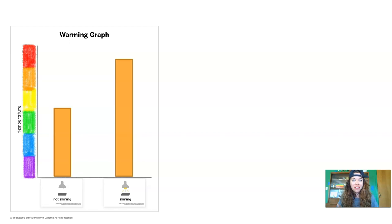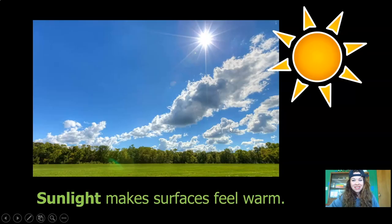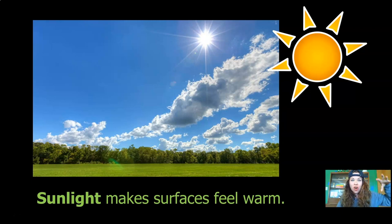We used this data that we gathered to make a graph. Graphs are used to organize data and information so that it's easy for people to look at and understand quickly. The temperature was higher under the lamp that was shining, and we can easily see that in our bar graph. We discovered that sunlight makes surfaces feel warm. We used our lamp model to show this as evidence, because the lamp that was on is like sunlight and it made the surface warm up — it made the thermometer's temperature rise. But the lamp that was off didn't make the temperature rise, so we know that sunlight makes surfaces feel warm.